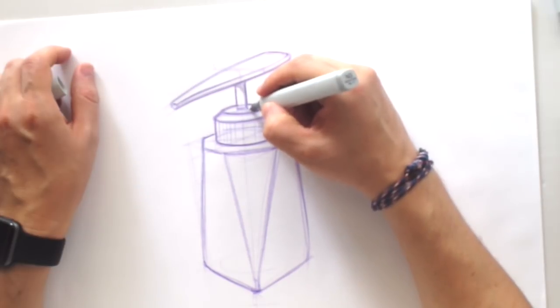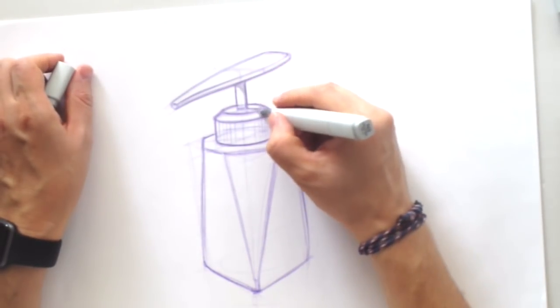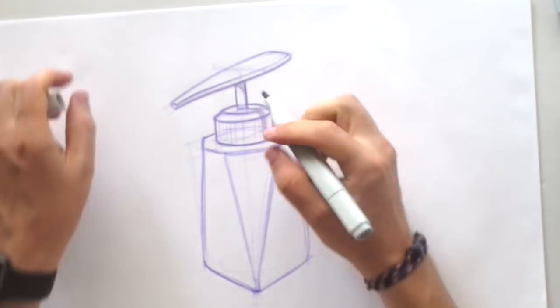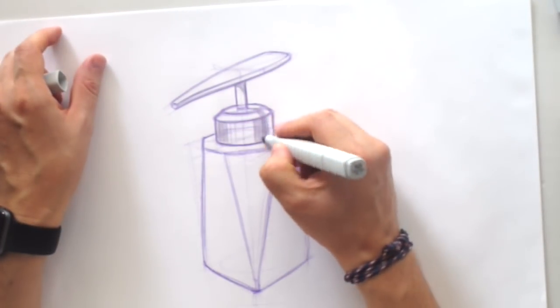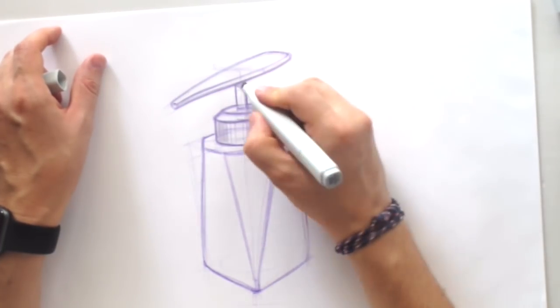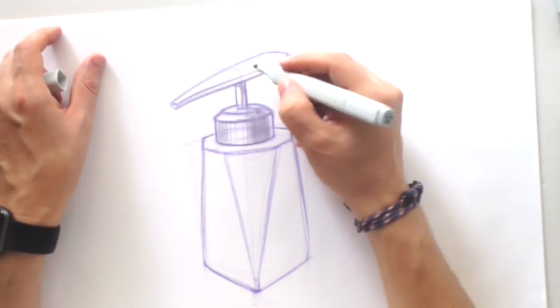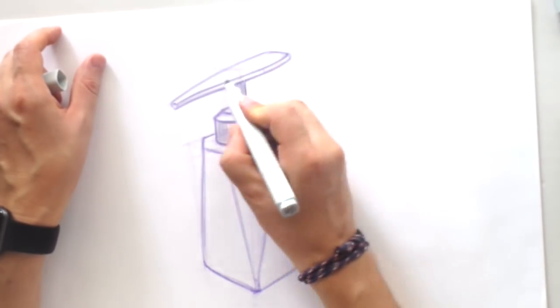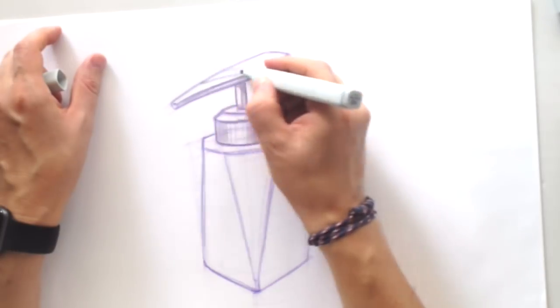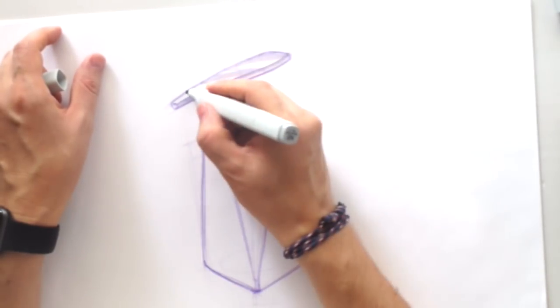I'm using the color, sorry, the cool tone of the Copic marker. Something about number four, grey tone. Just to put the initial shapes, the shading, like this.